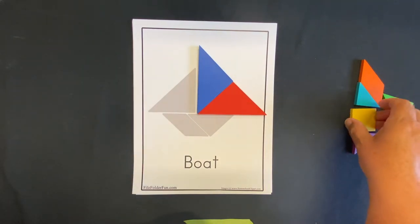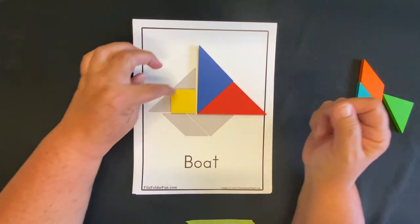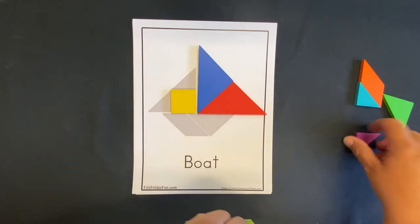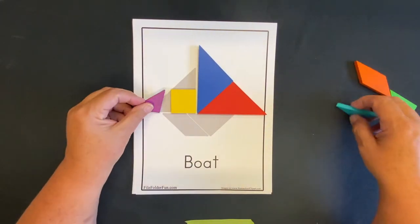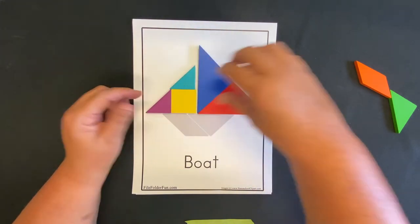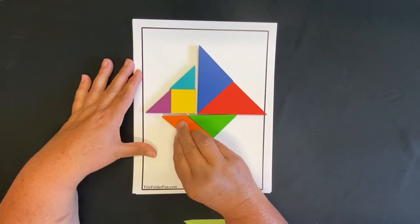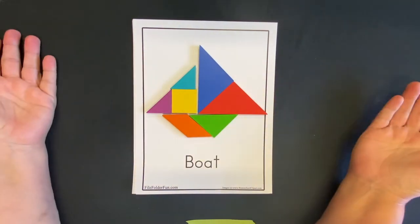And then we're going to take our square, put it right here in the corner. And then what shapes do you think go here? Two small triangles. If that's what you yelled out, you're right. And then at the bottom we use our medium triangle and our parallelogram. And we made our boat.